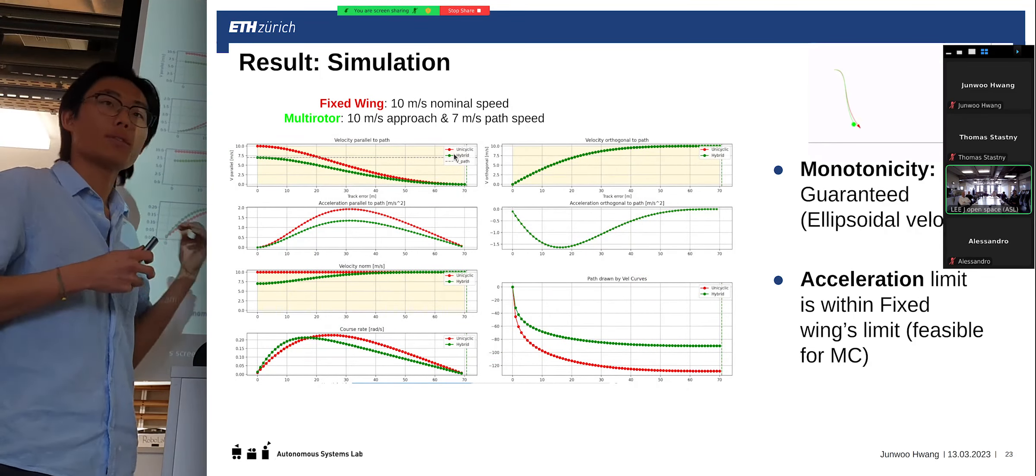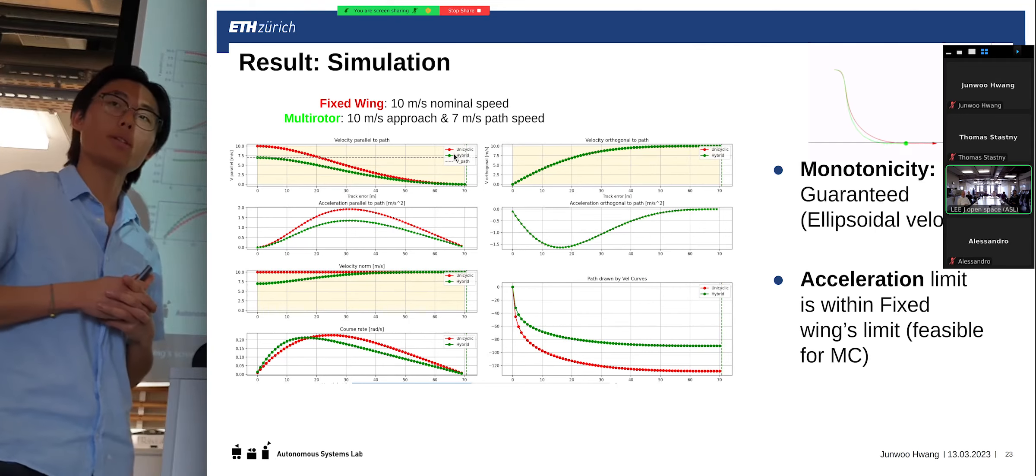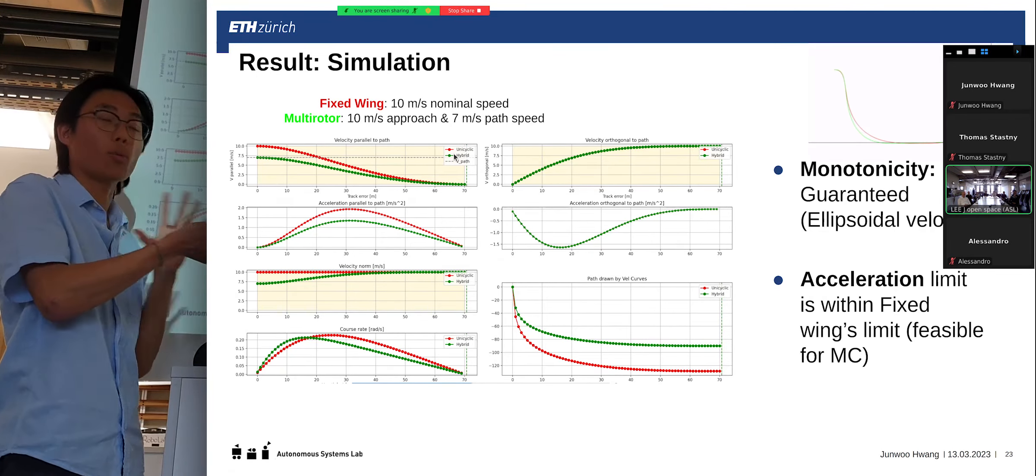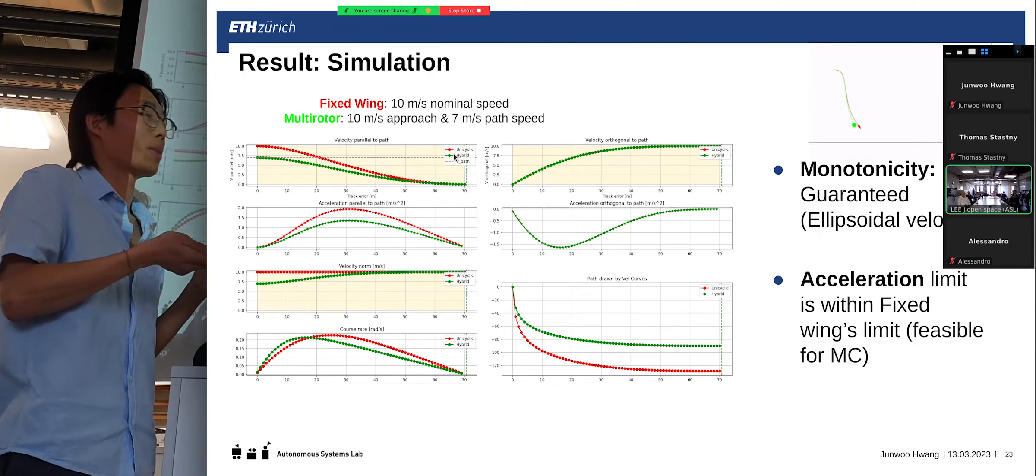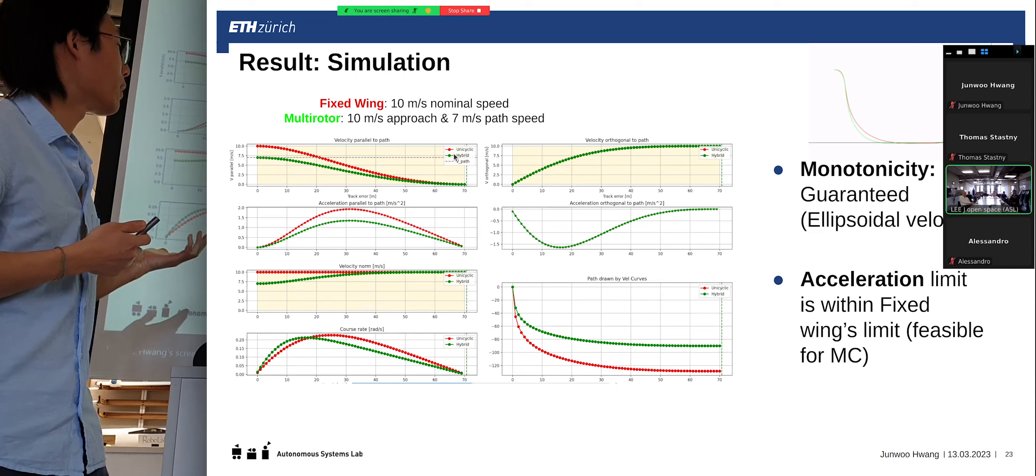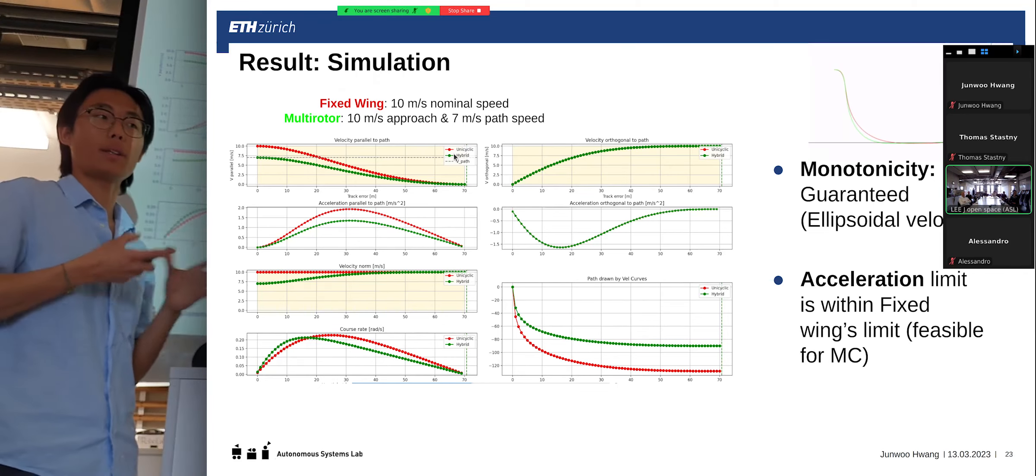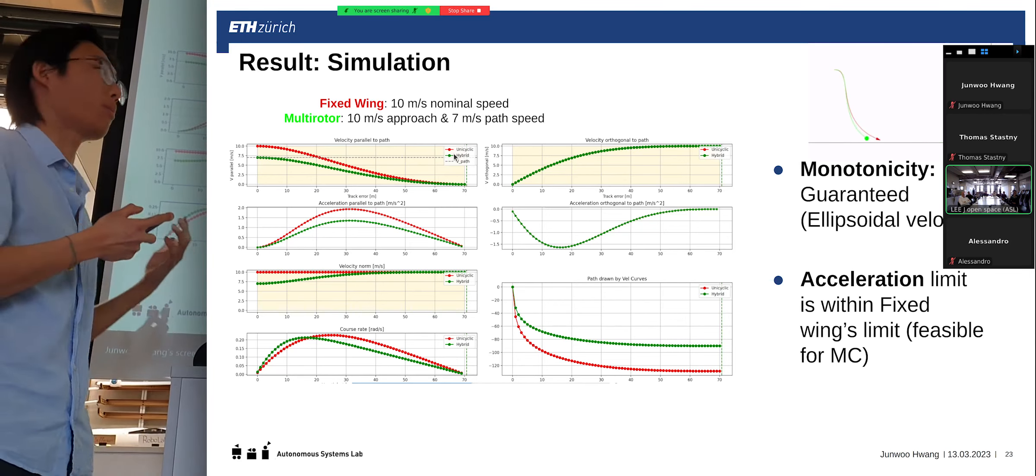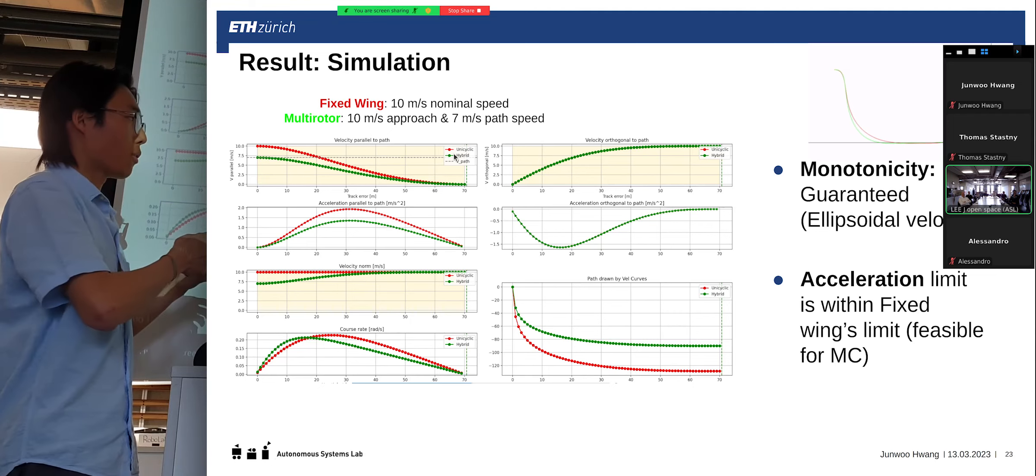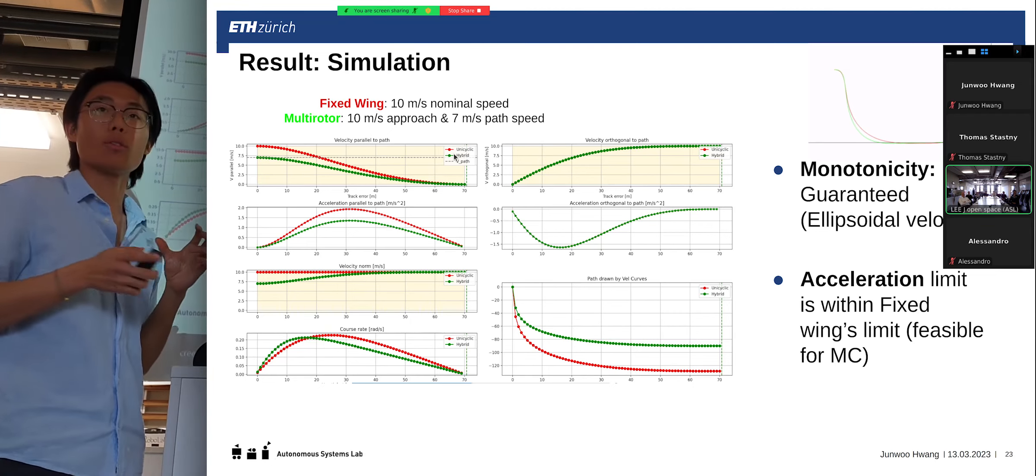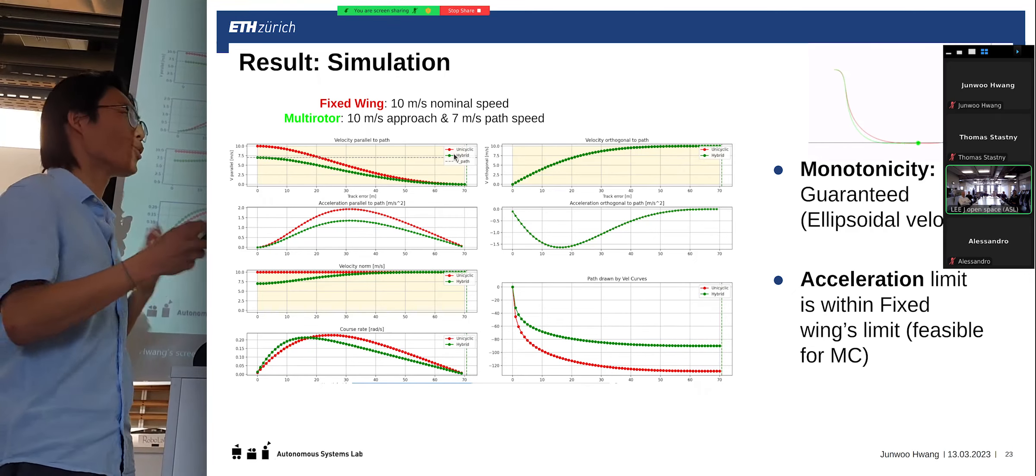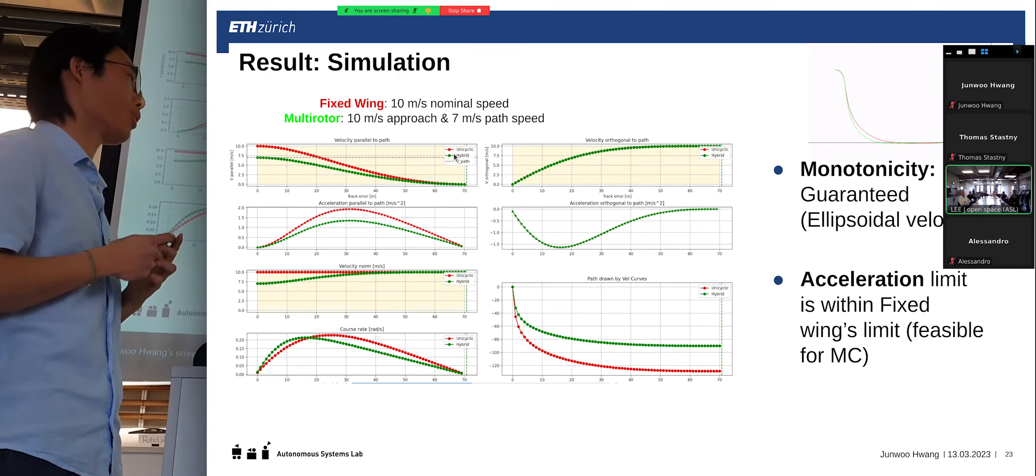And, furthermore, previously, we discussed the monotonicity, and then the acceleration limit. So, the monotonicity-wise, because we have an ellipsoid velocity curve, it means that it will never have non-monotonic behavior, because, by definition, the ellipse will always have a decreasing or increasing distance to the origin. And, secondly, the acceleration limit-wise, because we already have orthogonal component identical to the original formulation, the acceleration in the orthogonal frame doesn't change. And, also, the path parallel acceleration can change. However, because of the norm of the total vector, the fixed-wing's limit, which is significantly lower than the multirotor's case, is still applied for the multirotor's orthogonal motion, which, basically, means that it is feasible for the multirotor's acceleration limit.